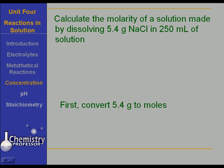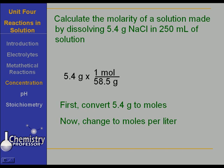To calculate this, let's first convert 5.4 grams to moles. 5.4 grams times one mole over 58.5 grams for sodium chloride. Now we have grams canceling, but we've got to have moles per liter. So we multiply it by one over 0.25 liter, and that gives us 0.37 moles per liter, or 0.37 molar.